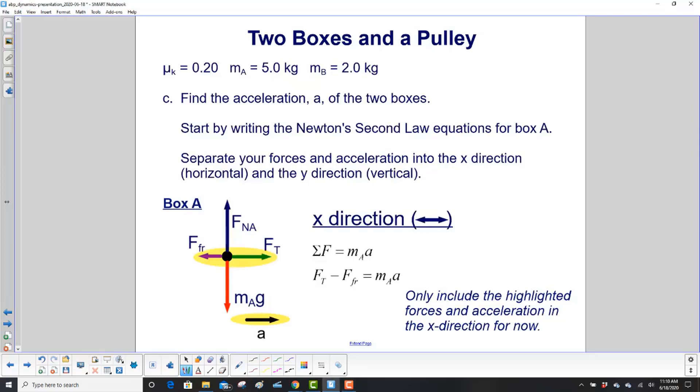Now we'll write Newton's second law equations for box A. In the x direction, here's my sum of the forces in the x direction. We have tension force to the right, so that's positive. Friction force is negative to the left. And our acceleration is to the right, so that's positive.